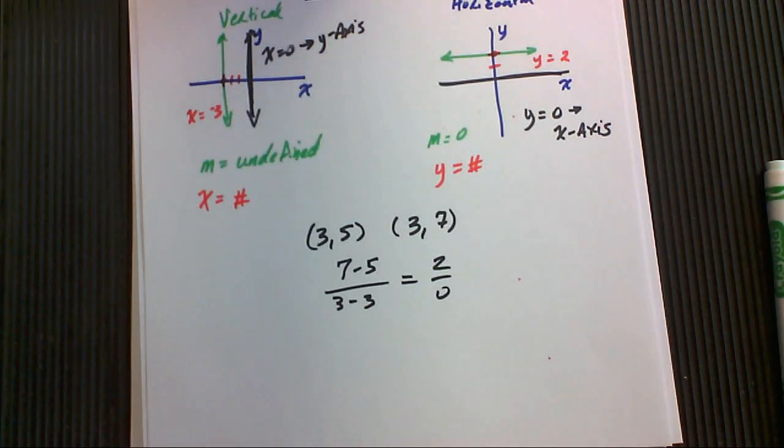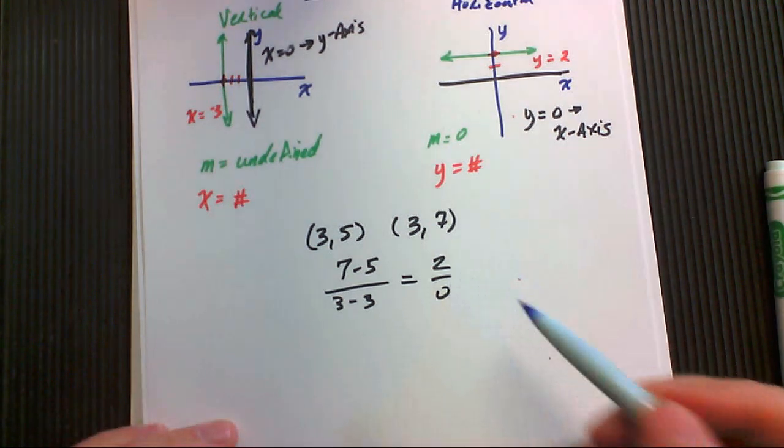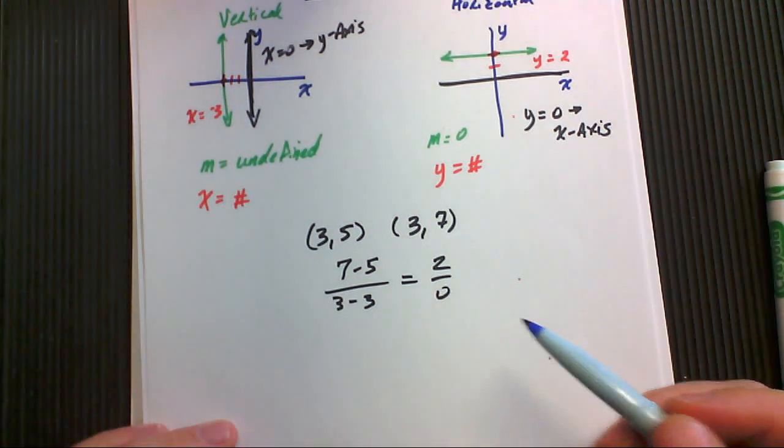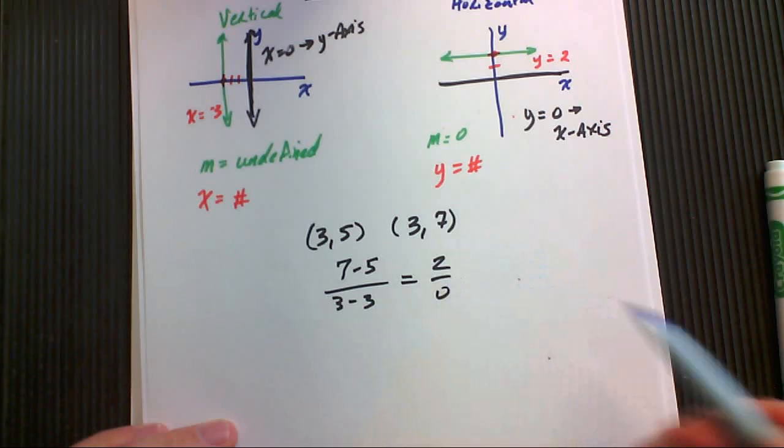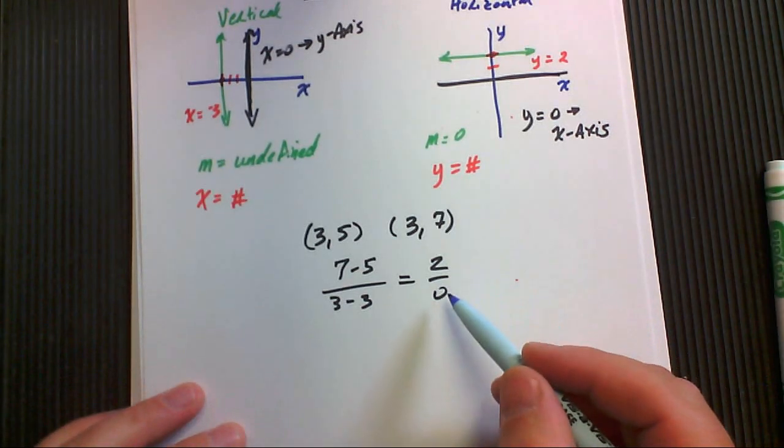Now, fractions mean divide. So what this is really saying, it's really saying zero times what number equals two? Well, since zero times anything always equals zero, there's no answer. That's why it's undefined.